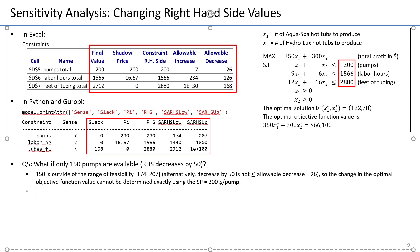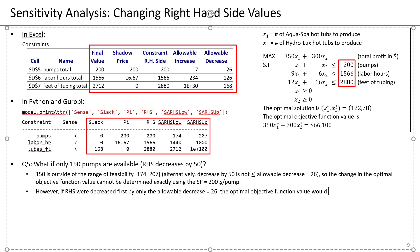However, we can consider this decrease of 50 incrementally, first decreasing by the allowable decrease. If the right-hand side were decreased first by only the allowable decrease, which is equal to 26, the optimal objective function value would decrease by 26 times the shadow price, which would be $5,200.